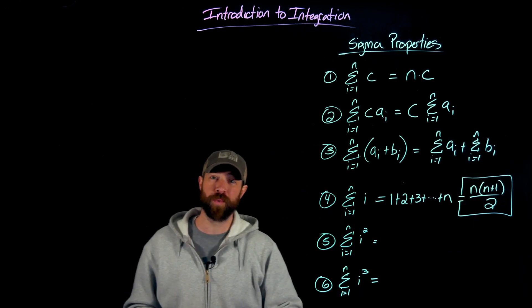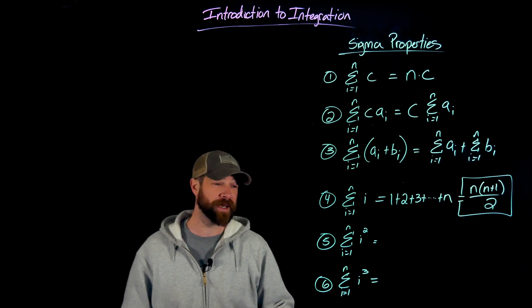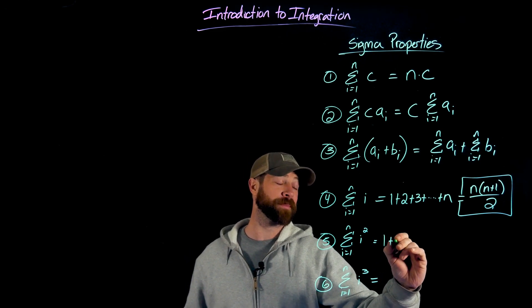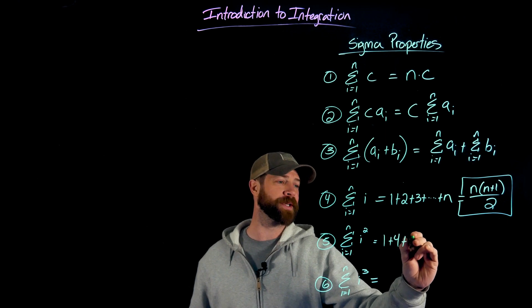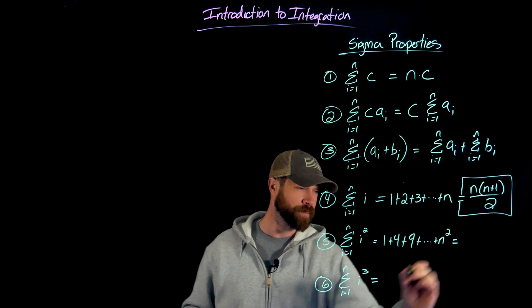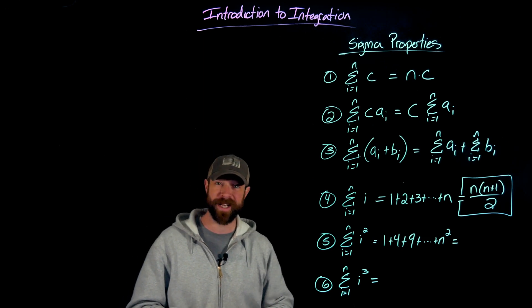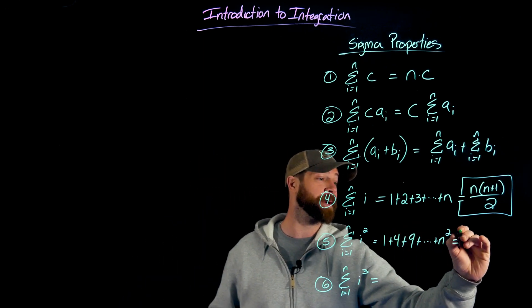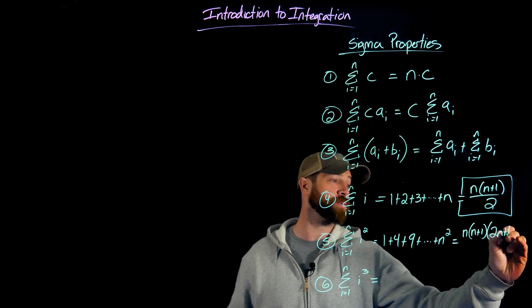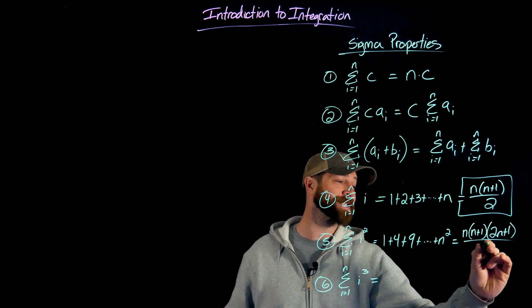In the same way, we can add up all the first perfect squares starting from one. So if we square each term, this summation would look like one plus two squared is four plus three squared is nine, all the way up to n squared. We can evaluate that summation for any n by using this formula of n times n plus one times two n plus one, all over six.